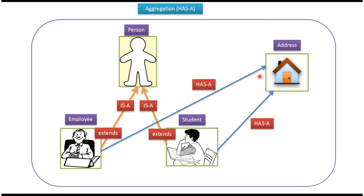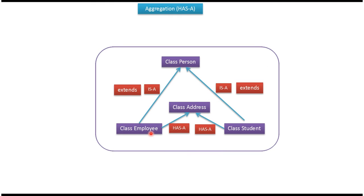Employee can have an Address, so employee can have an address instance — employee has an address. Like that, student can have an address instance — student has an address. Employee is a person, meaning employee class extends class Person. Student is a person, meaning class Student extends class Person. Employee has an address, meaning employee contains an address instance. Student has an address, meaning student class contains an address instance.